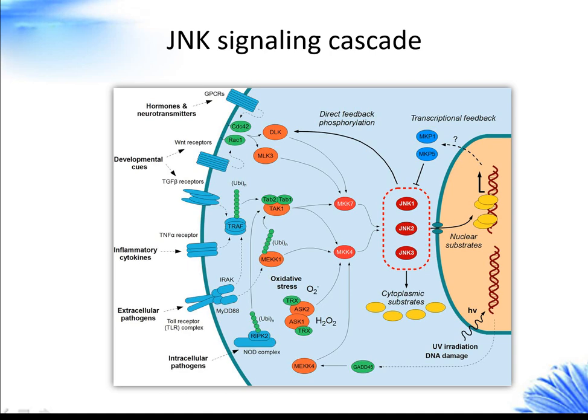The activated MAP3Ks transmit the signals to kinases at the MAP2K level, which are mainly MKK4 and MKK7. As with other MAP2Ks, the main JNK kinases MKK4 and MKK7 are activated by phosphorylation of the typical Ser/Thr motif.